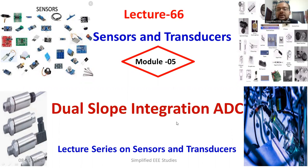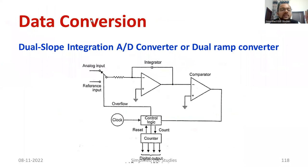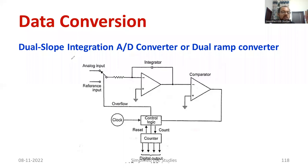Let us move on to the discussion on dual slope integration analog to digital conversion. I would like to explain this technique with the help of a simple block diagram. As you can see, it is a simple schematic diagram concerning the ADC technique. We have an analog input — it will be in the form of analog waveforms.